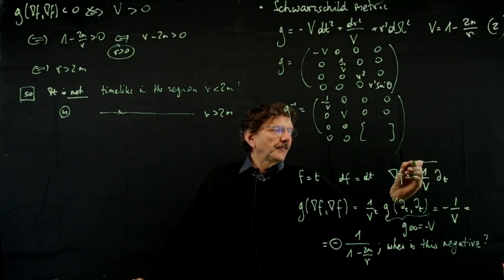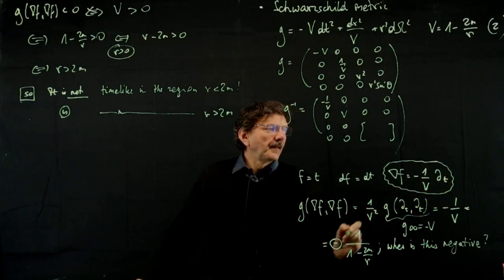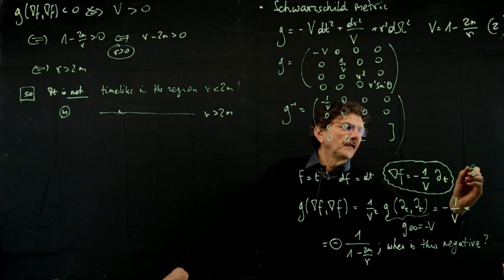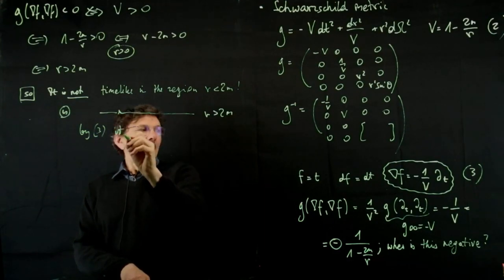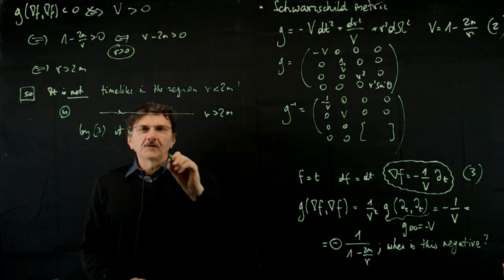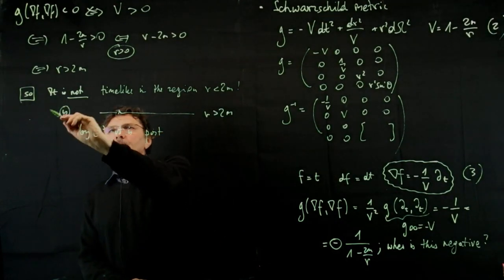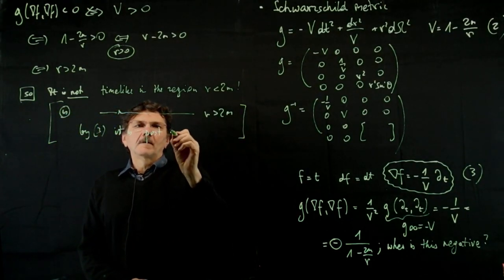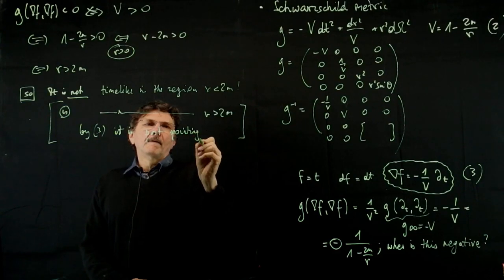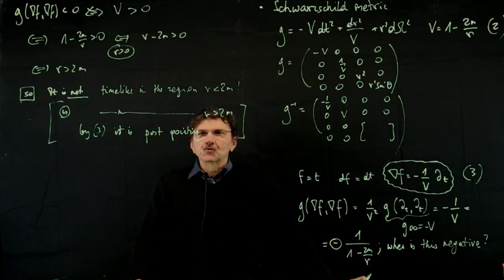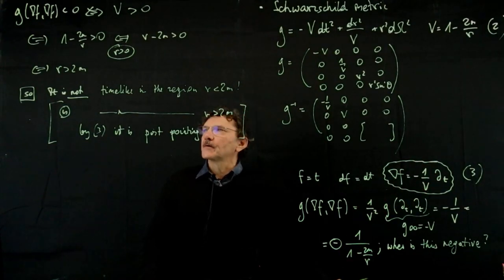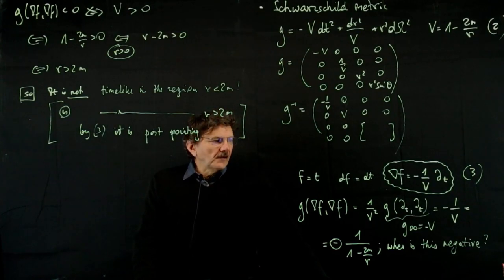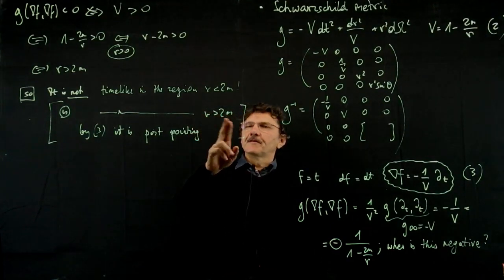By equation 3, taking the usual time orientation that ∂_t is future pointing, the gradient of t is past pointing in the exterior region r > 2m. In other words, t is a time function in the exterior world, the region r > 2m.